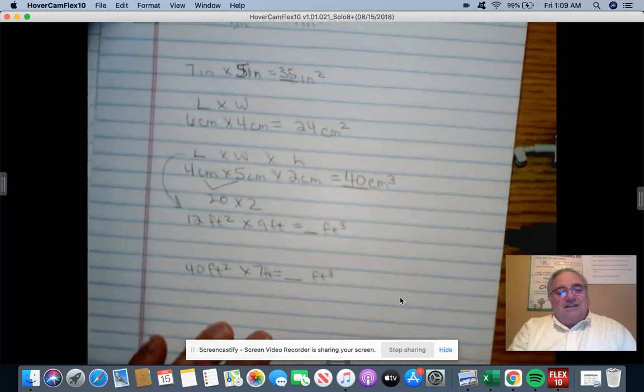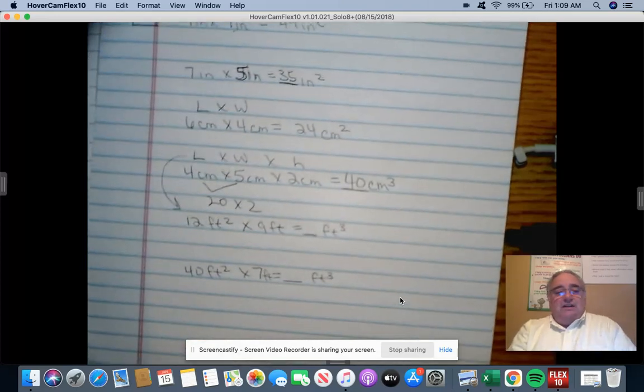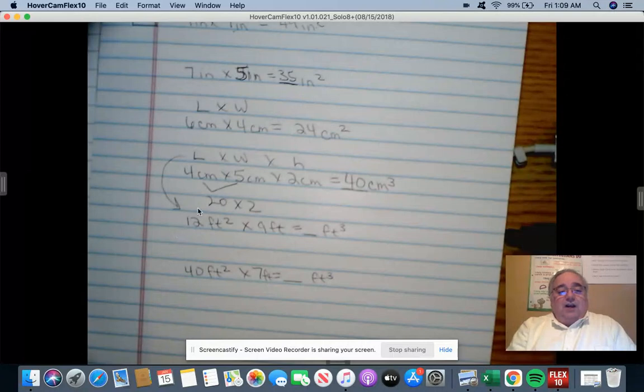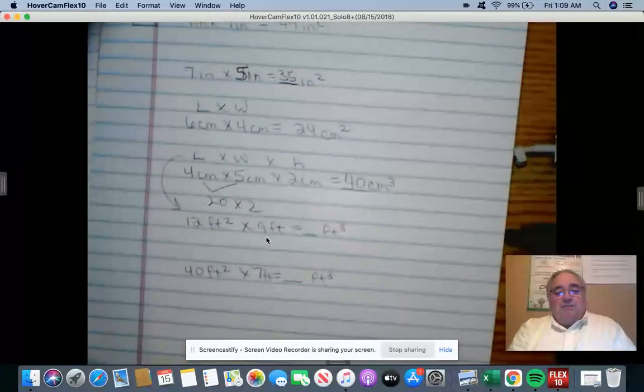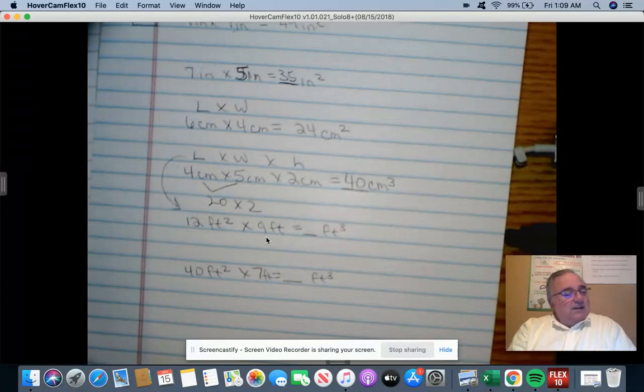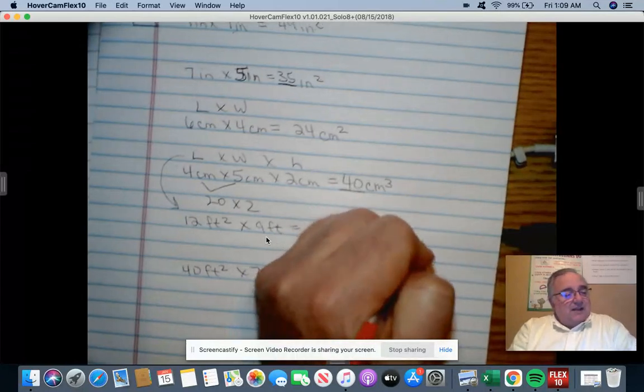Now we're going to have a little more difficult one here. We have the area already worked out for us, which is the length times the width, and we're multiplying it by nine. What is 12 times nine?